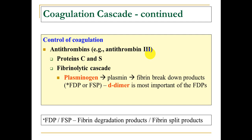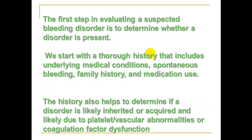Control of coagulation requires antithrombin 3, protein C and S, which are essential for clot lysis. The fibrinolytic cascade depends on plasminogen, which converts to plasmin, producing fibrin degradation products (FDP) and D-dimer, the most important product of FDP.